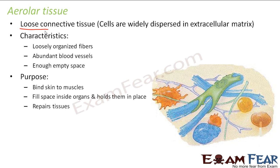Areolar tissue is strong enough to bind tissues, yet soft enough to provide flexibility and cushioning. Because there is a lot of empty space and extracellular matrix, it has a lot of flexibility. This gives it a cushioning effect on the organs present inside the body — just like wrapping a glass object in a towel or thermocoil box to protect it from breaking. Areolar tissue acts as a cushion for other organs and is most widely found in vertebrates.